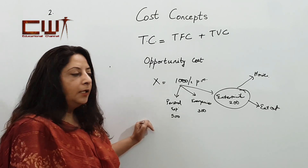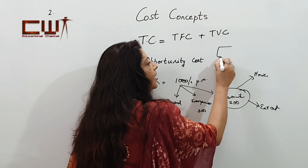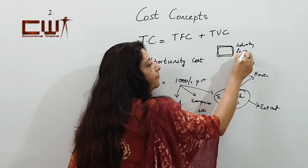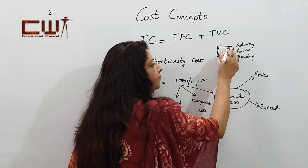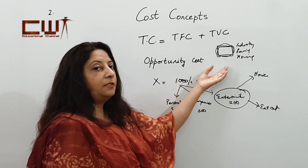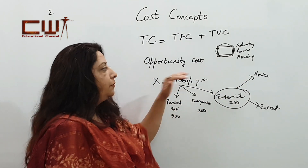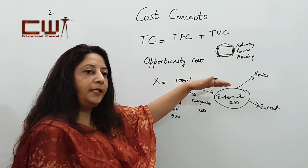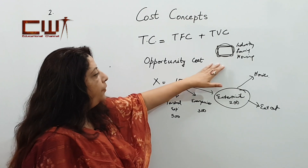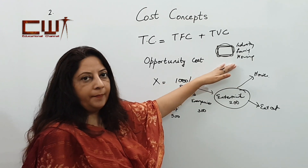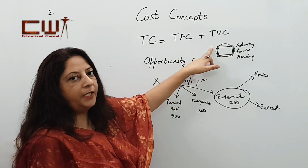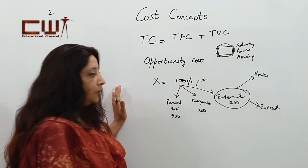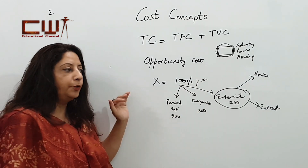In terms of production, suppose a producer has a certain piece of land. That land can be used for setting up an industry, for farming, or for housing — it has various alternatives. So the next best alternative which is foregone becomes the opportunity cost. If this person wants to start an industry, the opportunity cost will be farming — the next best alternative use of that land. So opportunity cost means the next best alternative which is foregone to produce a certain product.